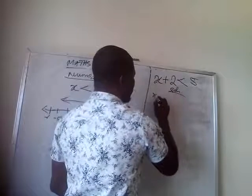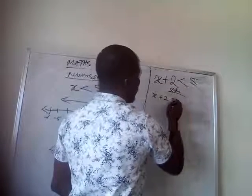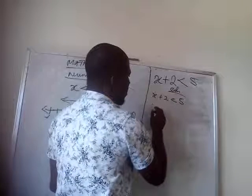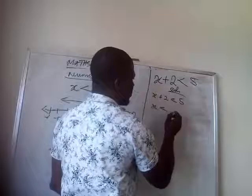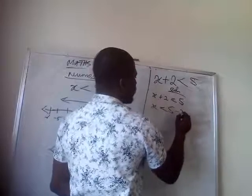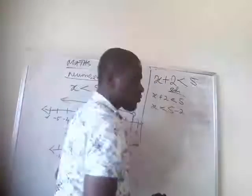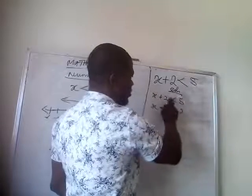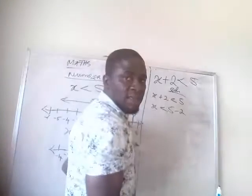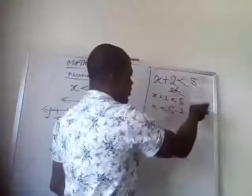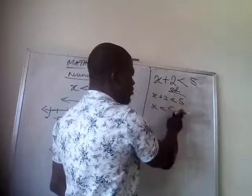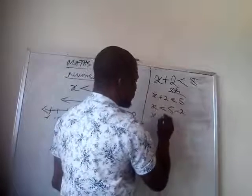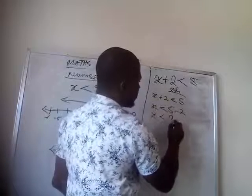When you collect like terms now, X plus 2 is less than 5. When you collect like terms, you have X is less than 5 minus 2. Because this one cross the less than sign, it works like equal to sign. So when it crosses, the sign changes from plus to minus. So that's why we have minus here. So you have X is less than 3.